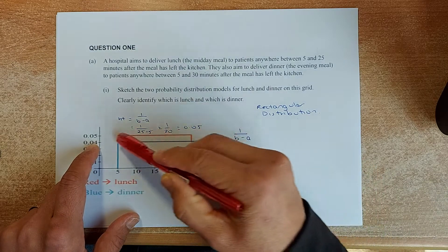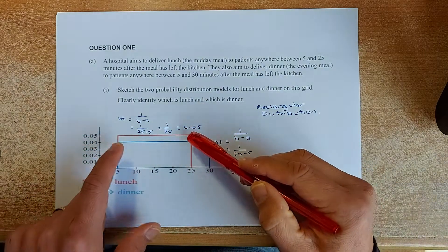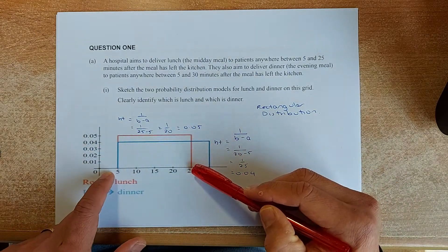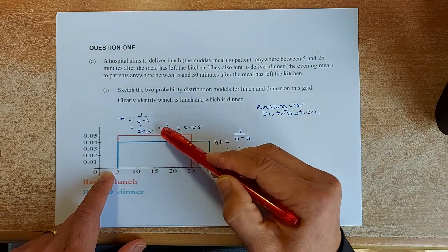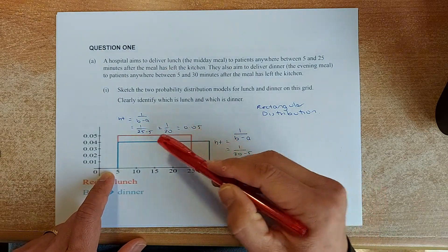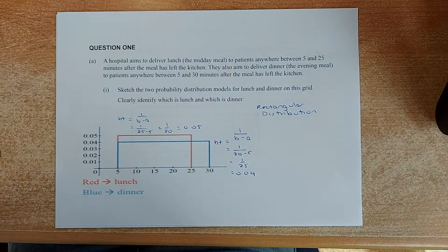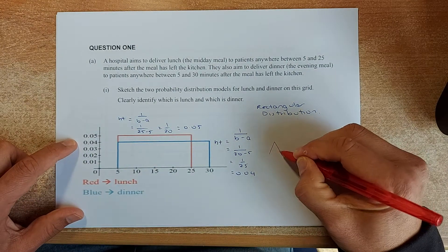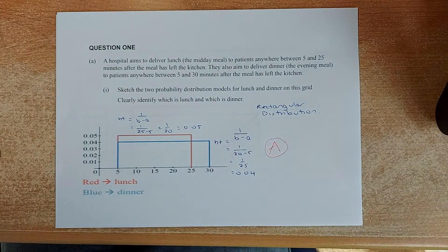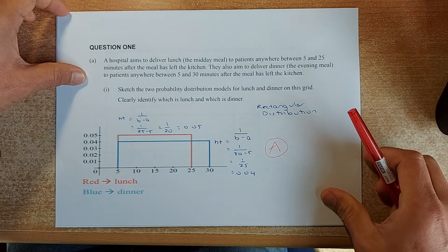Similarly for the orange line, we have to find the height. 25 to 5. So 1 divided by 25 minus 5 is 1 divided by 20, it's going to be 0.05. That's why the height is 5. If you can draw that graph, that will give you an achievement in that paper. Let's proceed now.